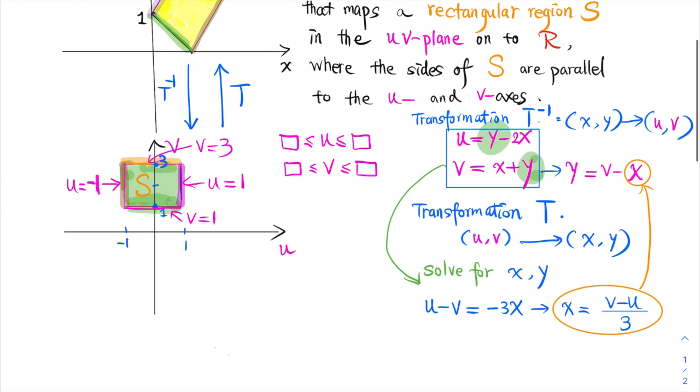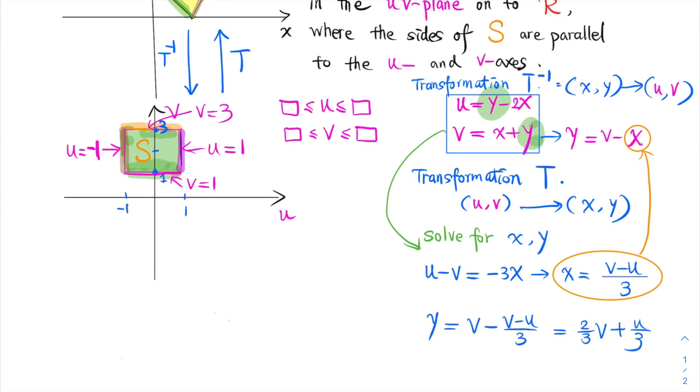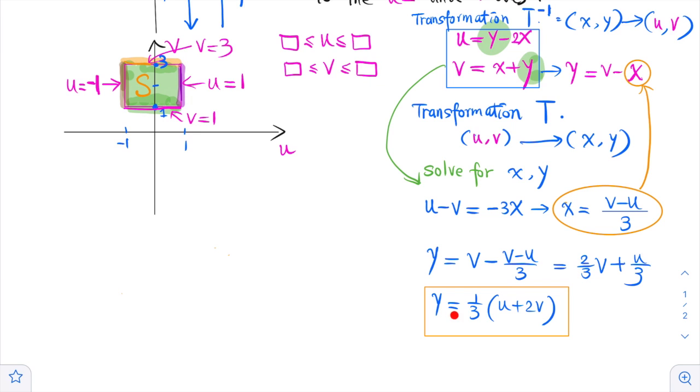we get Y equals 2 over 3 V plus U over 3. Another way to write this is Y equals 1 third times the quantity U plus 2V.